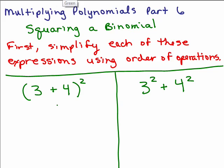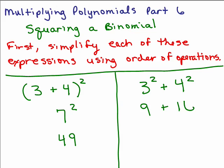Using order of operations on the left, we have to do inside parentheses first, so 3 plus 4 is 7, so we have 7 squared, that means 7 times 7, or 49. On the right-hand side, there are no parentheses, so we do any exponents: we have to do 3 squared and 4 squared. 3 squared is 3 times 3, 4 squared is 4 times 4, and so we get 25.